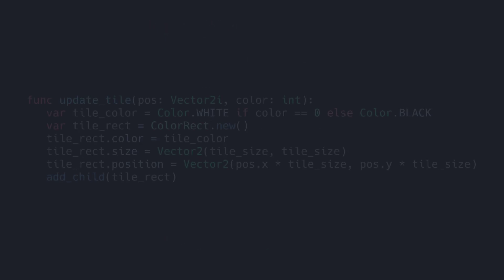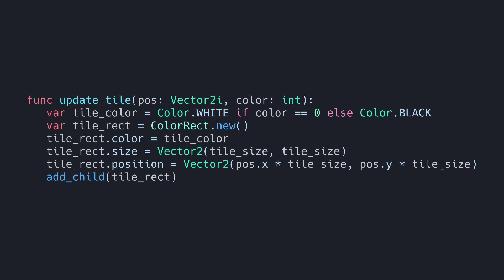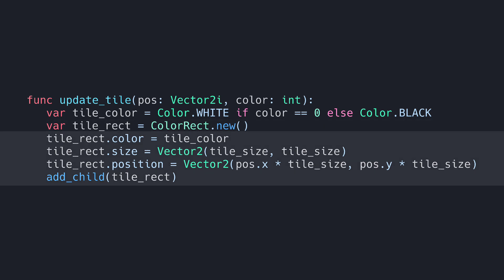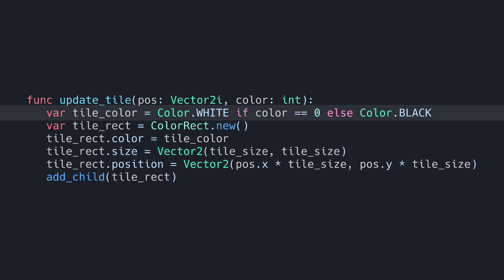Finally, we have the updateTile function that visually updates the tile based on its new color. We create a ColorRect for each tile and change its color based on whether it's black or white. Once you've added the script, hit play, and you'll see the ant in action — it starts flipping tiles and moving based on the simple rules we set up.